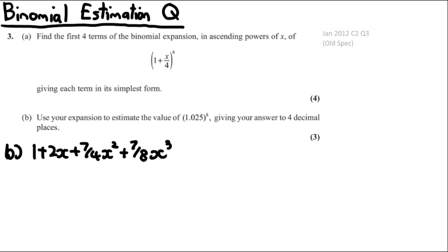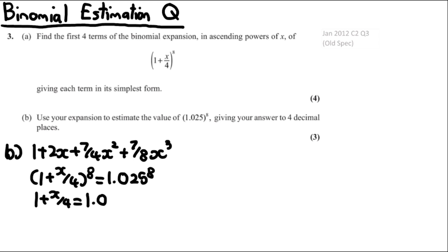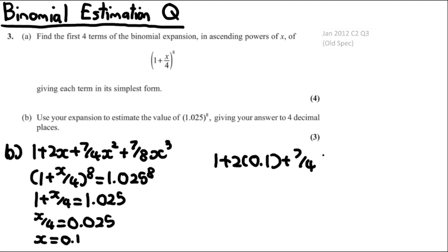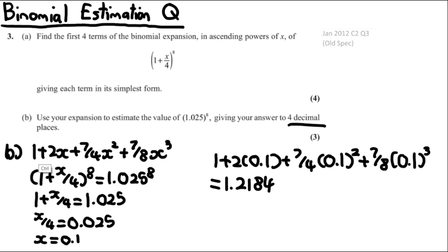For part B, we set (1 + x/4)^8 = 1.025^8, remove the powers: 1 + x/4 = 1.025, so x/4 = 0.025, giving x = 0.1. Substituting into the expression: 1 + 2(0.1) + (7/4)(0.1)² + (7/8)(0.1)³ = 1.2184 to 4 decimal places.